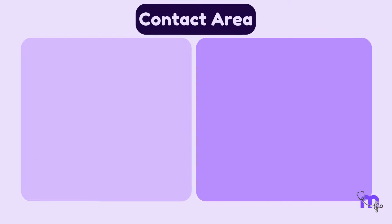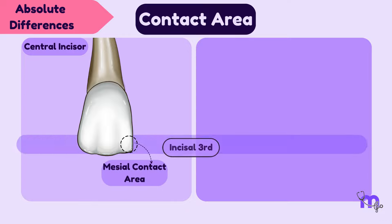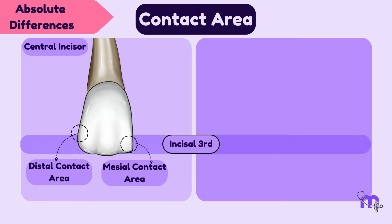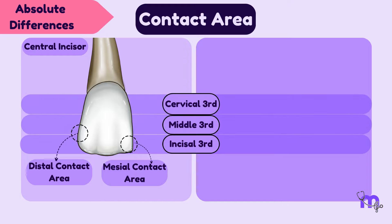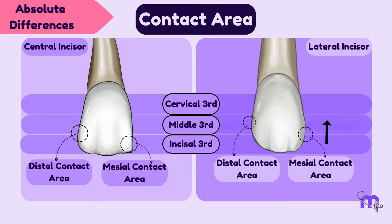Let us now move on to the contact areas to observe the absolute differences. In the maxillary central incisor, the contact areas are positioned more towards the incisal portion, with the mesial contact area occurring at the incisal third and the distal contact area at the junction of the incisal and middle third. However, in the lateral incisor, the mesial contact area is located at the junction of the incisal and middle third — more cervical than the contact area seen in the central incisor — and the distal contact area is positioned in the middle of the middle third.